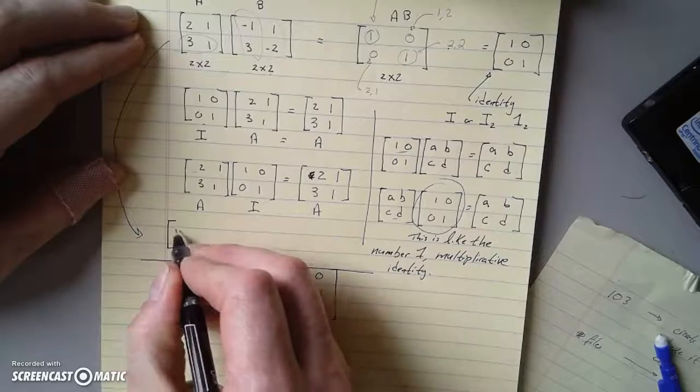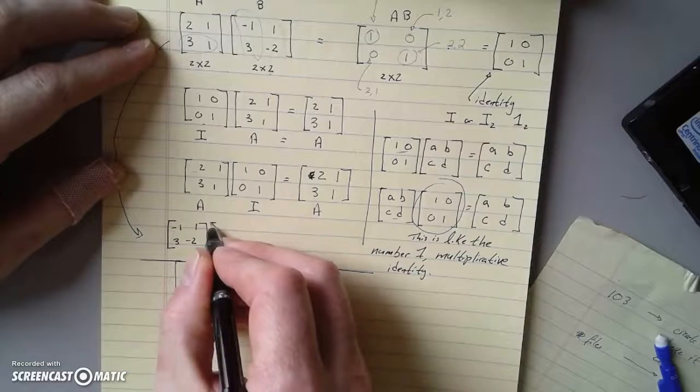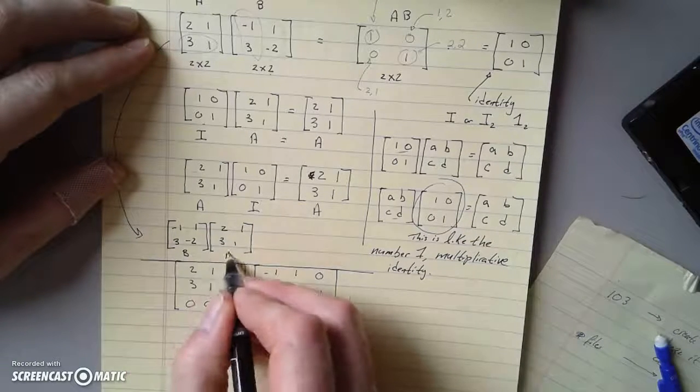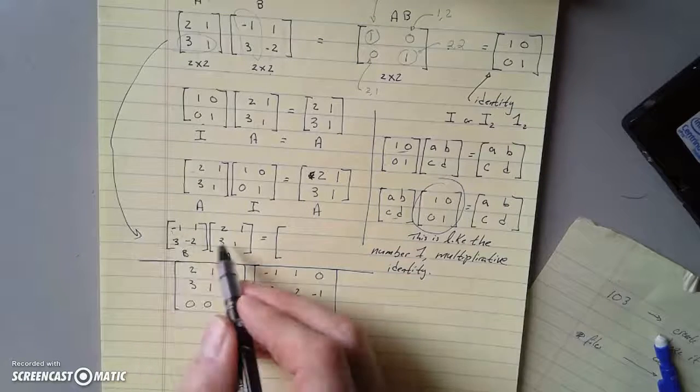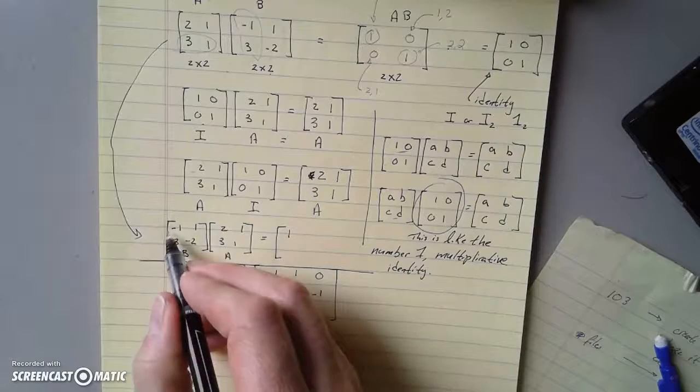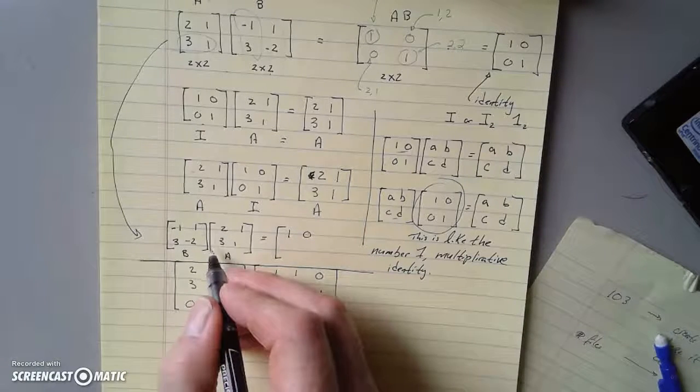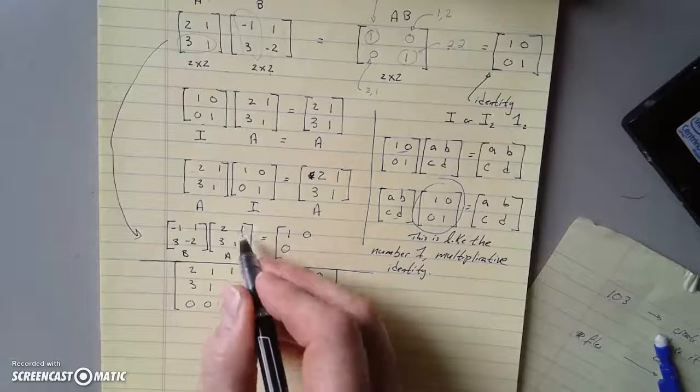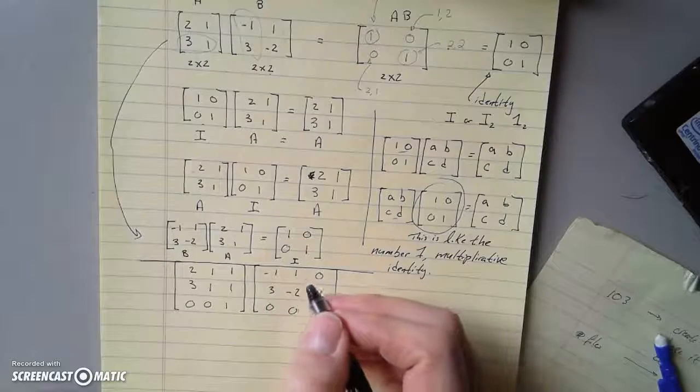So what if I take the opposite order, negative 1, 1, 3, negative 2, and I take 2, 1, 3, 1. So this is B, A. And remember, I mentioned the order is not always the same. What do we get? First row, first column, it's negative 2 plus 3, which is 1. First row, second column, it's negative 1 plus 1, which is 0. Second row, first column, that's 6 plus negative 6 is 0. Second row, second column, that'll be 3 minus 2, is 1. So we ended up with this I again. What gives?